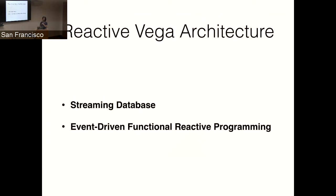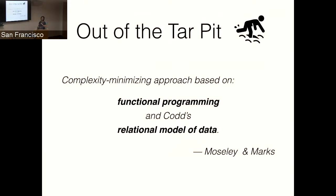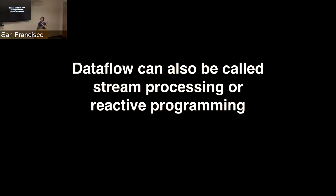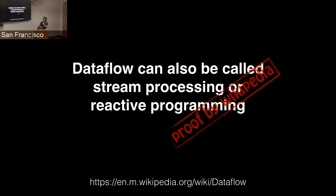Since we're here, I'll do a proof by Wikipedia: dataflow can also be called stream processing or reactive programming, which explains all the circularity when we hear these buzzwords. What ties streaming databases and functional reactive programming together is this notion of data-centric programming. Let's take a look at how Vega's architecture digests each component. For data, Vega specifies a name and a URL where the data comes from. In the dataflow diagram, you have a route that specifies input and — if there's no filtering — it goes directly to output.